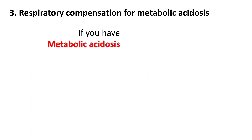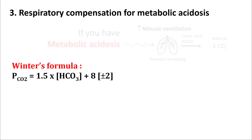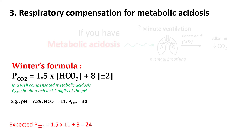The most important compensation is respiratory compensation for metabolic acidosis. If you have metabolic acidosis, it stimulates minute ventilation and you lose carbon dioxide — losing acid and making blood more alkaline. This is Winter's formula: expected pCO2 = 1.5 × bicarb + 8 ± 2. If you don't remember the formula, in a well-compensated metabolic acidosis the pCO2 should reach the last two digits of the pH. For example: pH 7.25, bicarb 11, pCO2 30. Expected pCO2 by Winter's formula is 24, or approximately 25 from the last two digits of 7.25.